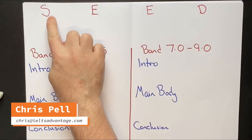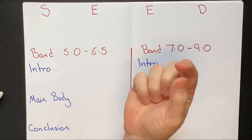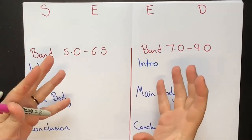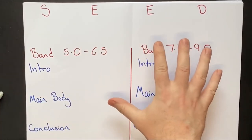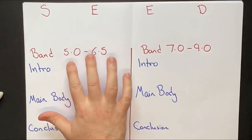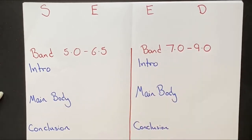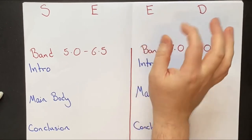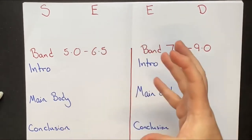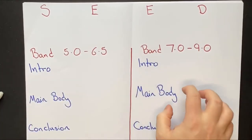In this lesson, we're going to look at something called the seed principle or the seed technique. This concept has helped thousands of my students who are struggling at about 5 or 6.5 and needed to move to about 7, 8, or even 9. Once they understand this seed technique, not only do their scores improve, but everything becomes much easier and there's not so much stress involved in writing task 2.